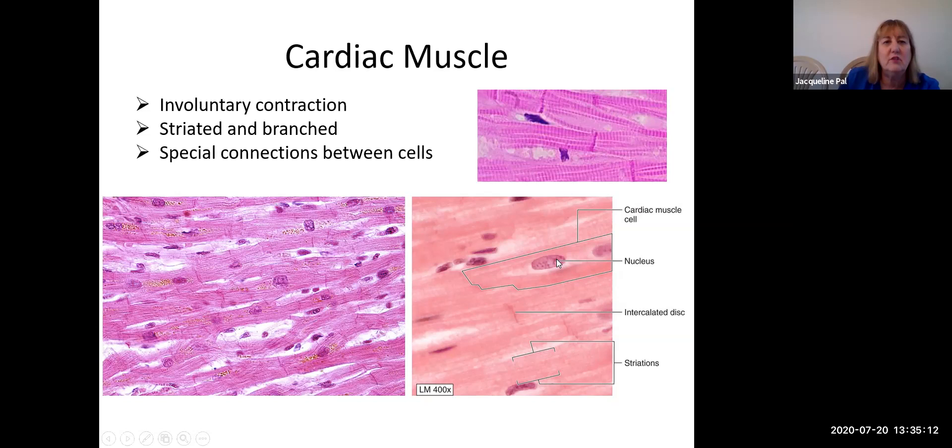Usually only has one nucleus, but it can have two. But we have these specialized connections between the cells. Do you see those dark purple lines here? Well, we've got them here as well. Now that I point them out, makes them real easy to see, doesn't it? And these are specialized connections between cells so that things can flow back and forth between adjacent cells, which means you should know what those specialized connections are. Because we've already talked about intercellular junctions.